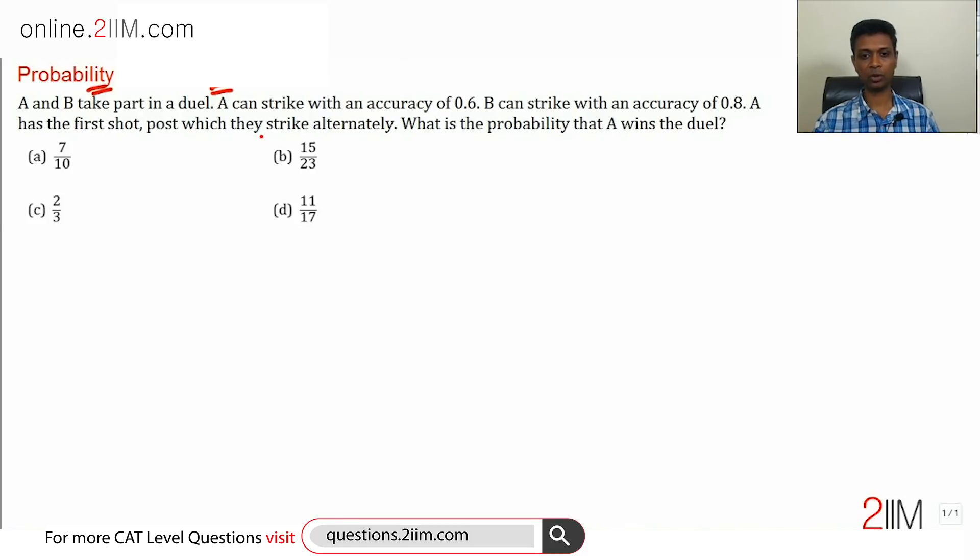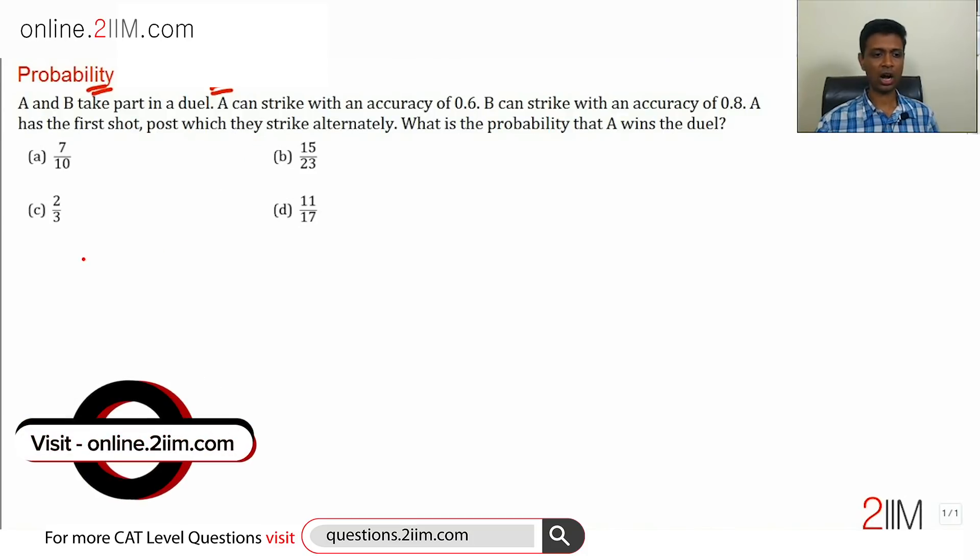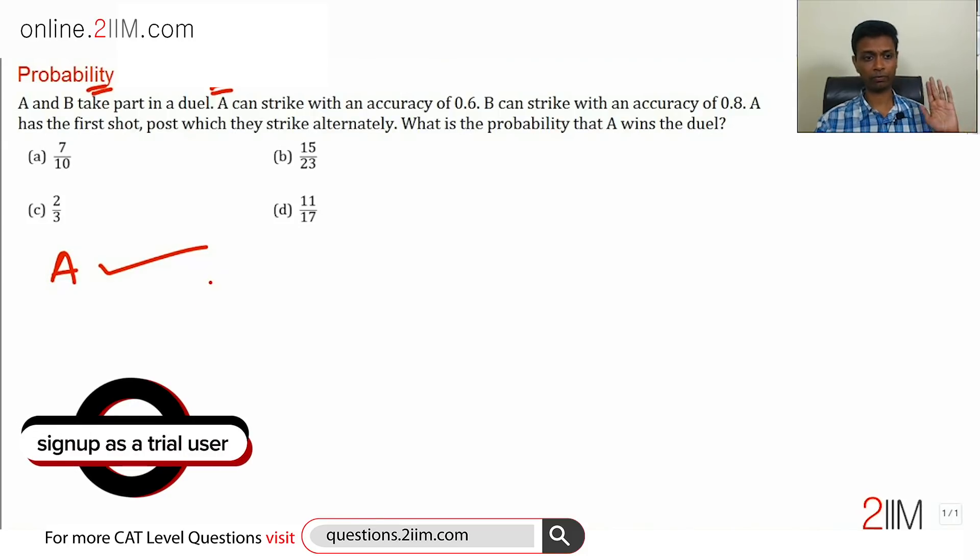What is the probability that A wins the duel? Think about this: how can A win the duel? A takes a shot and gets it right straight away - done, B is out, A has won the duel. The second way is A misses, B misses, and then A gets it right.